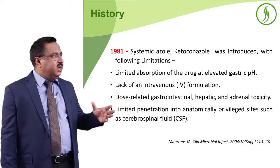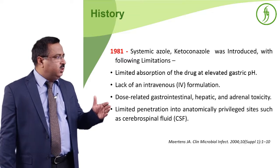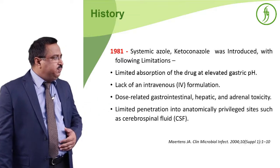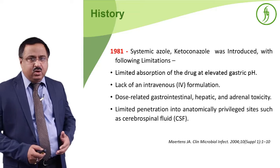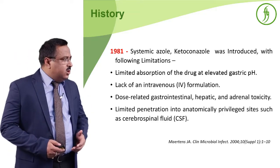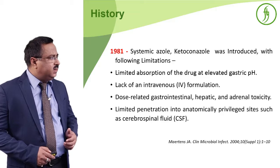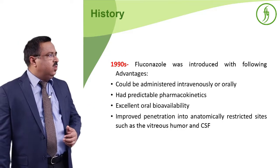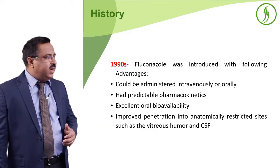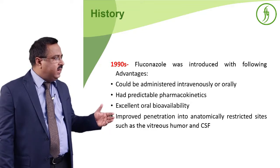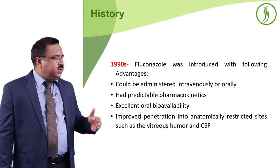A little bit about systemic azoles: in 1981 ketoconazole was introduced, but it had limited absorption at elevated gastric pH, no intravenous formulation, and drug-related toxicity including hepatotoxicity and adrenal toxicity. Because of these drawbacks it did not become widely used. But in 1990, fluconazole was introduced with the following advantages: it could be administered intravenously or orally, it had very predictable pharmacokinetics, a very good oral bioavailability, and improved penetration into anatomically restricted sites.